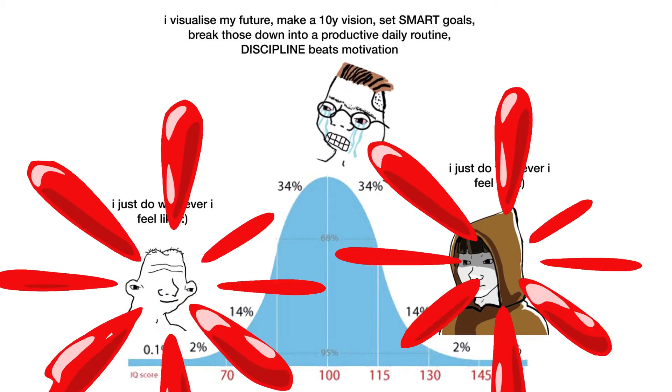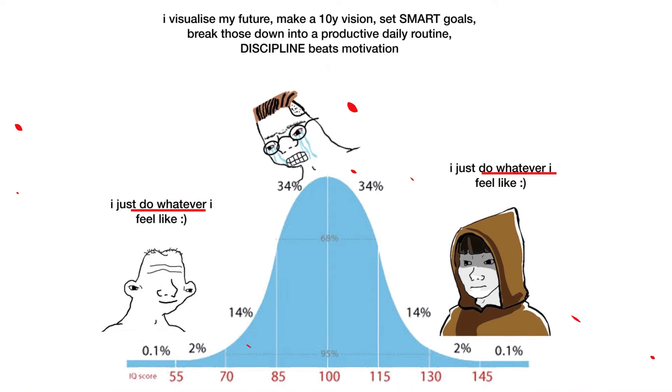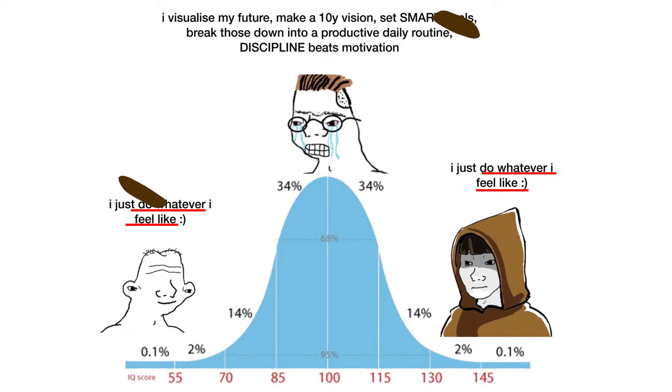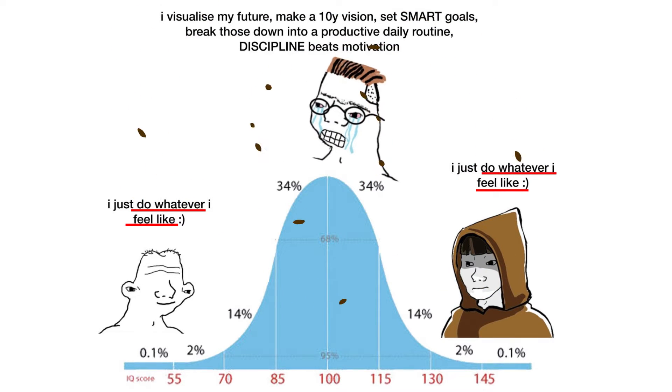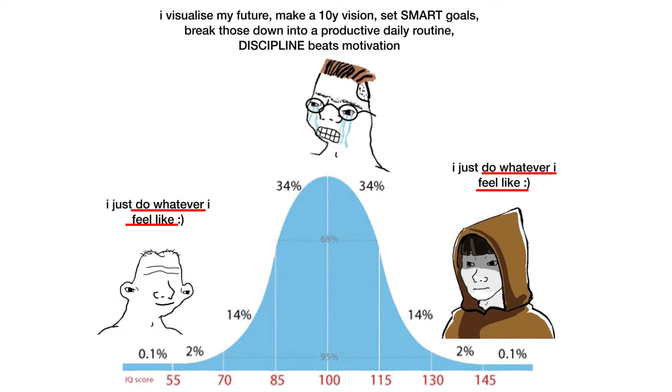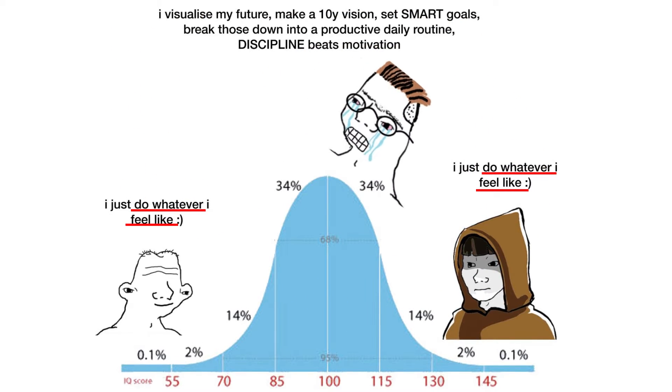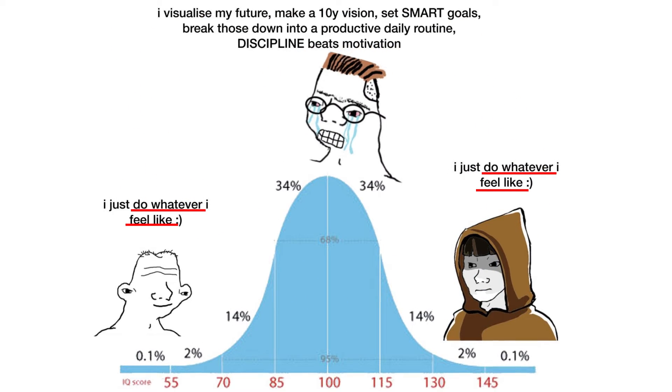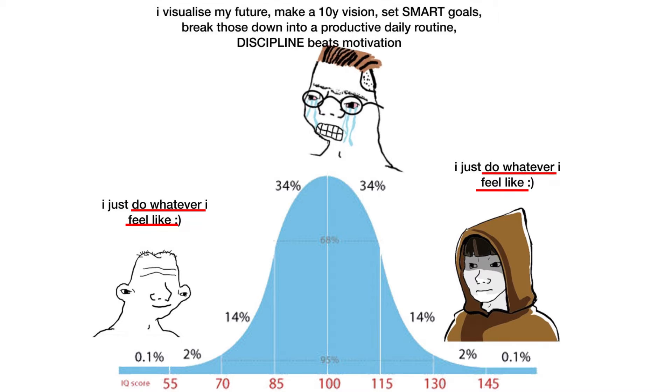In this example, the low and the high IQs both do whatever they feel like, where the midwits doom themselves to a life of inaction because they stress themselves out with things like visualizing the future and setting goals.